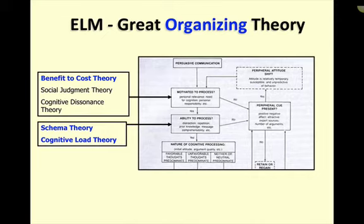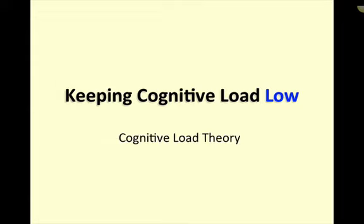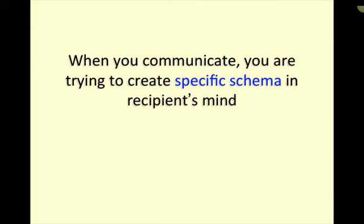Of these, benefit-to-cost theory, schema theory, and cognitive load theory — I consider those the most important. It does not mean you don't have to know the other two theories, but I think these three are critical. So what I want to focus on today, and actually this week, is application of those theories. Specifically, keeping cognitive load low. That obviously involves cognitive load theory, and it clearly involves benefit-to-cost theory because cognitive load is a cost. It also involves schema theory — when we're communicating, we're trying to create a specific schema in the recipient's mind.